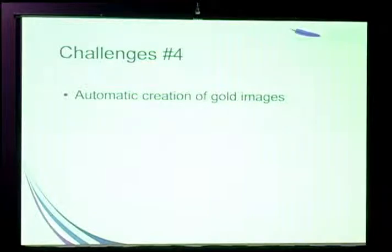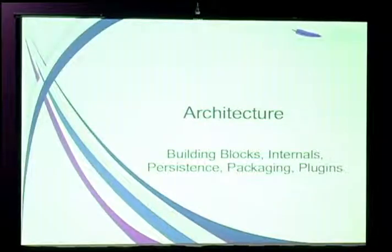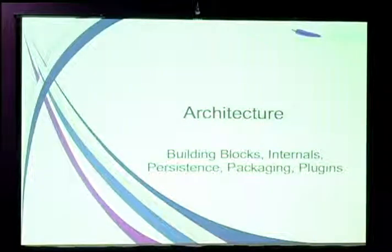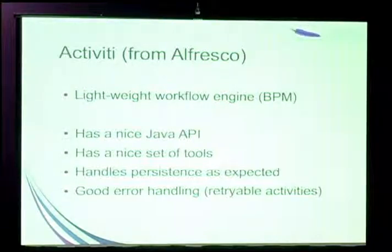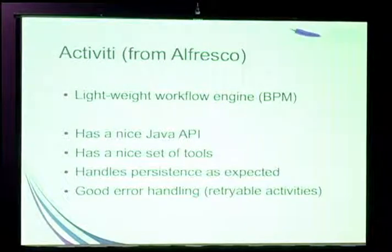We want to automate the golden image process as a side effect of starting a larger cluster. From an architecture point of view, we've been able to reuse many existing components. One of them is Activiti from Alfresco. Activiti is the backbone for all we do from an orchestration point of view. It has a nice Java API, tools for creating and watching processes in execution, handles all our persistence needs, and provides good error handling as long as you design your activities as retriable units.